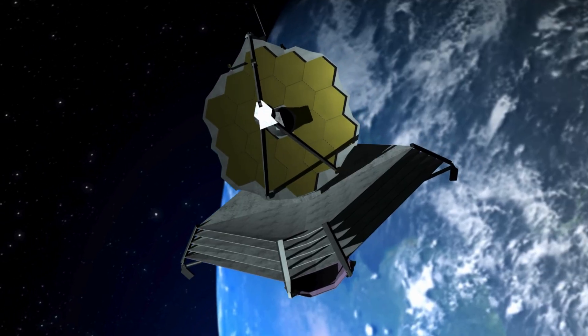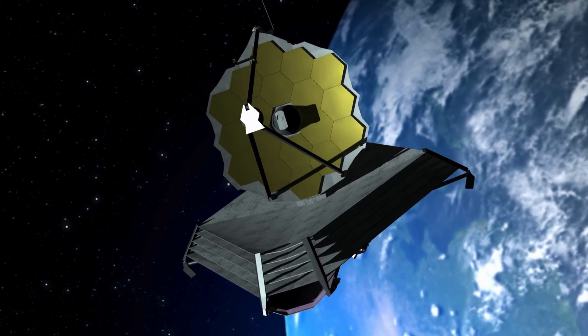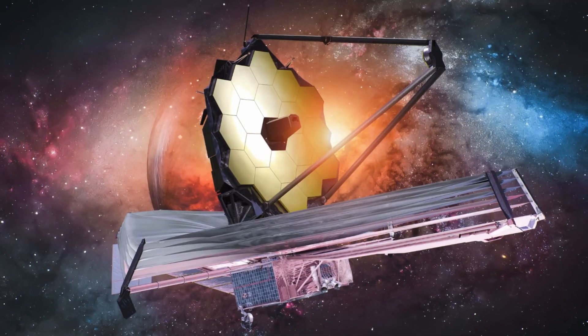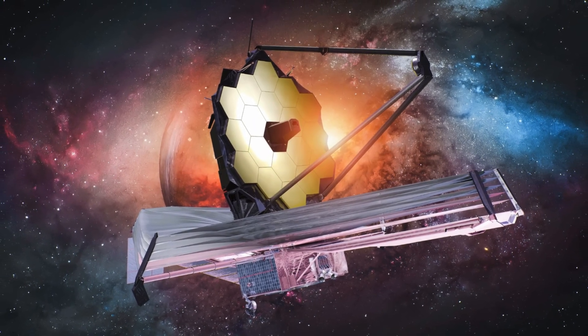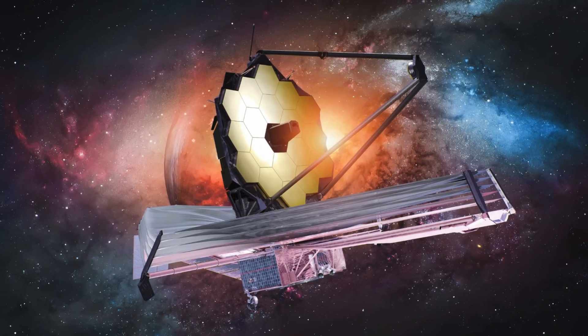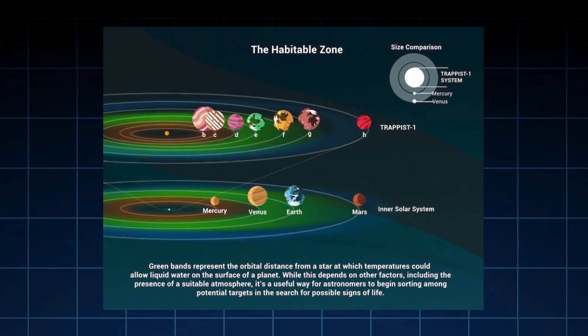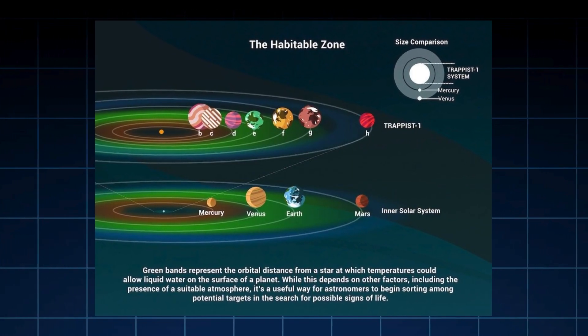Even ancient worlds, orbiting stars twice the sun's age in metal-poor regions, hold on to substantial air. This resilience blurs the line between stripped hell and dynamic body, suggesting that rocky planets are far hardier than our models allowed.